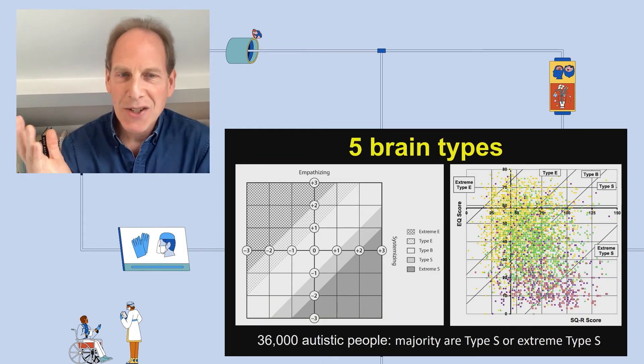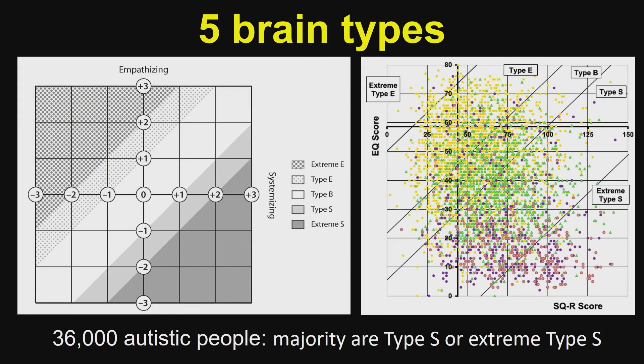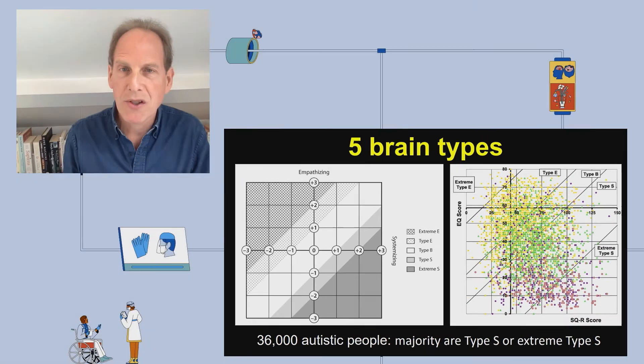And those 600,000 people also took two other questionnaires, the empathy quotient, the EQ, and the systemizing quotient, the SQ. And what we found was that you can divide the whole population into five brain types based on whether an individual leans more towards empathy or more towards systemizing. So those who lean more towards empathy we call type E, and those who lean more towards systemizing we call type S. And of course there are those who are extreme, they systemize non-stop and they see patterns everywhere. We call them extreme type S, but they struggle to understand people's thoughts and feelings.